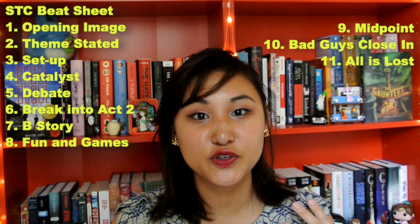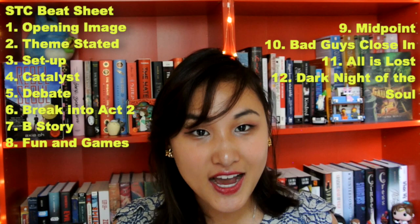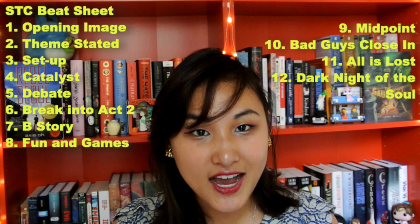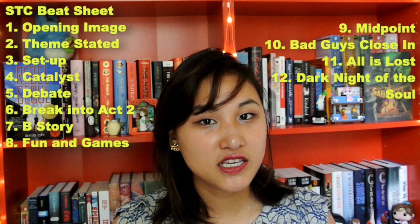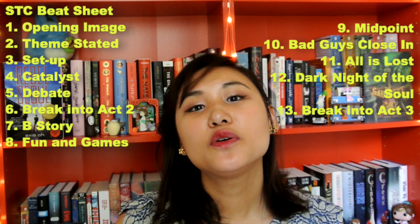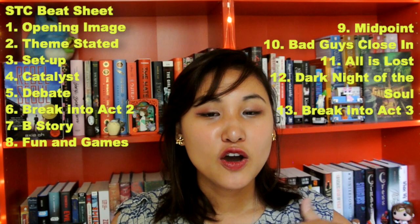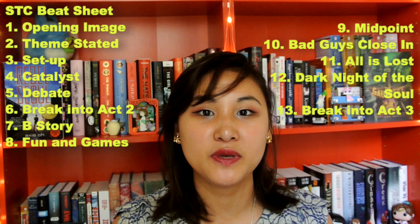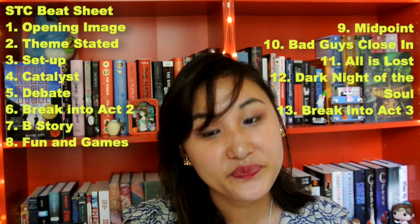11. All Is Lost: Rue is killed and Katniss has to face the death of someone she's started to care about — someone who reminds her of Prim, whose protection was her whole goal. 12. Dark Night of the Soul — the character's reaction: Katniss, not caring about the cameras or playing the game, pays tribute to Rue, says goodbye to her friend, and gives her last funeral rites, which is seen across the whole country of Panem. 13. Break into Act 3 — everything comes together: it is announced that two tributes from the same district can now win. Having already overcome her need to be alone, Katniss decides to team up with Peeta, finds him sick, and must now find a way to save them both.